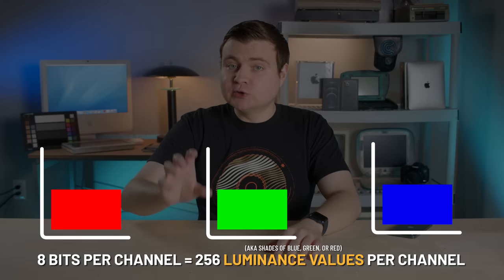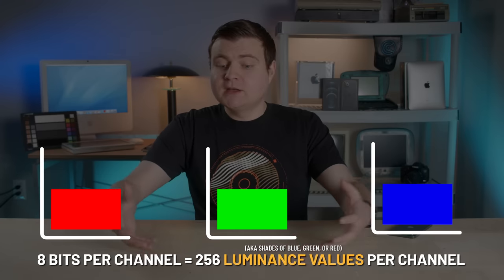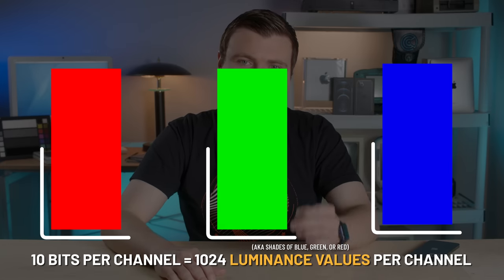But now we run into another problem: color limitations. Most videos that you watch are encoded in 8-bit color, which allocates 256 luminance values per color channel — red, green, and blue. Combined together, that's not enough to give HDR the wiggle room it needs to create the pretty pictures you see. That's why HDR standards use 10-bit color, and in some cases 12-bit color. 10-bit color offers 1024 luminance values per channel, and when you multiply all that together, that gives high dynamic range video enough wiggle room to preserve all the brightness and show all those colors.